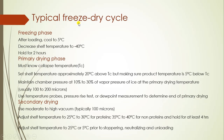This is the hierarchy of a typical freeze-dry cycle. First is the freezing phase: after loading, cooling is done to 5 degrees Celsius, then shelf temperature decreases to minus 40 degrees Celsius and is held generally for 2 hours for freezing of the solution. The next step is the primary drying phase, which should be performed below the collapse temperature. The shelf temperature must be approximately 20 degrees Celsius above the collapse temperature, but ensure that product temperature is 5 degrees Celsius below the critical collapse temperature. Chamber pressure is maintained at 10 to 30 percent of the vapor pressure of ice at the primary drying temperature, usually 100 to 200 microns Hg.